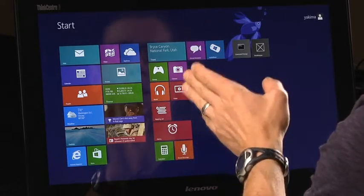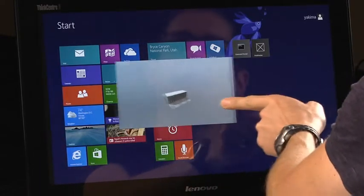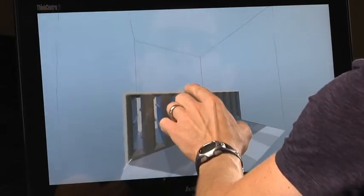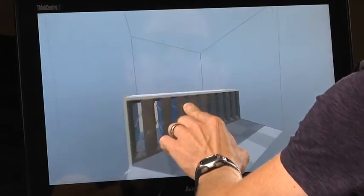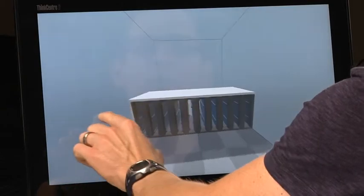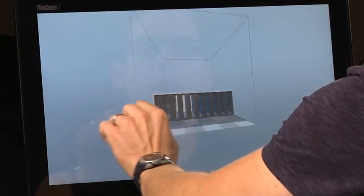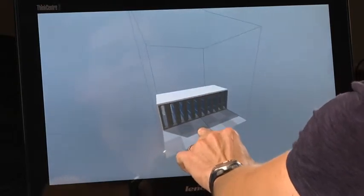So here I'm running the Windows 8.1 preview and I've got a model that I've designed in SolidWorks here open in a 3D printing aware Windows Store app. So as you can see here, I can use touch to manipulate the model to make sure it's exactly what I want to print.